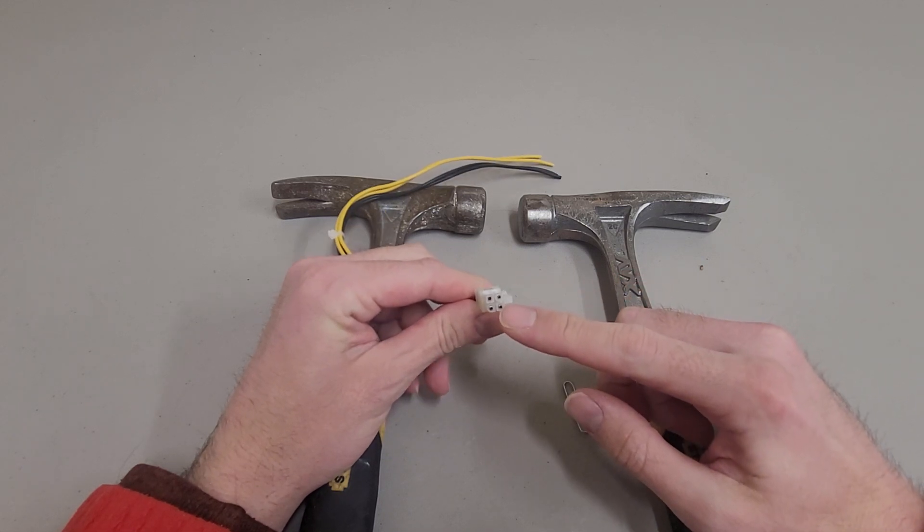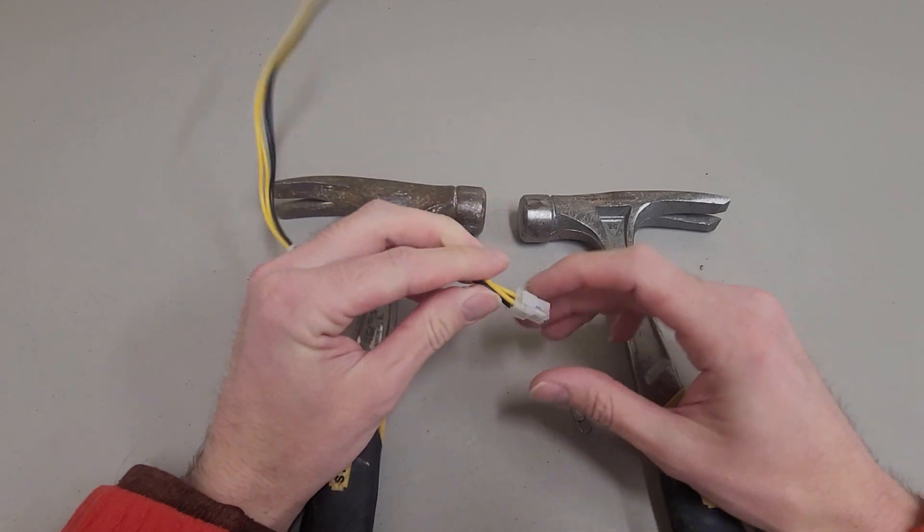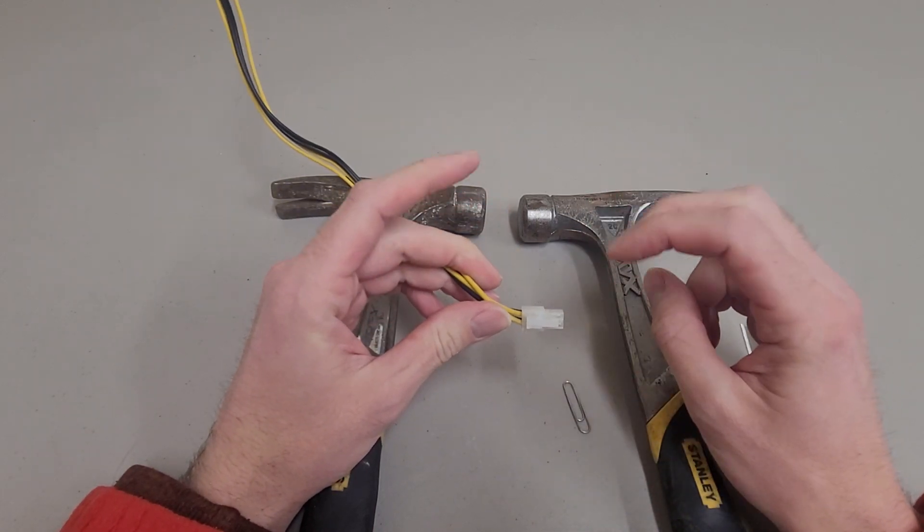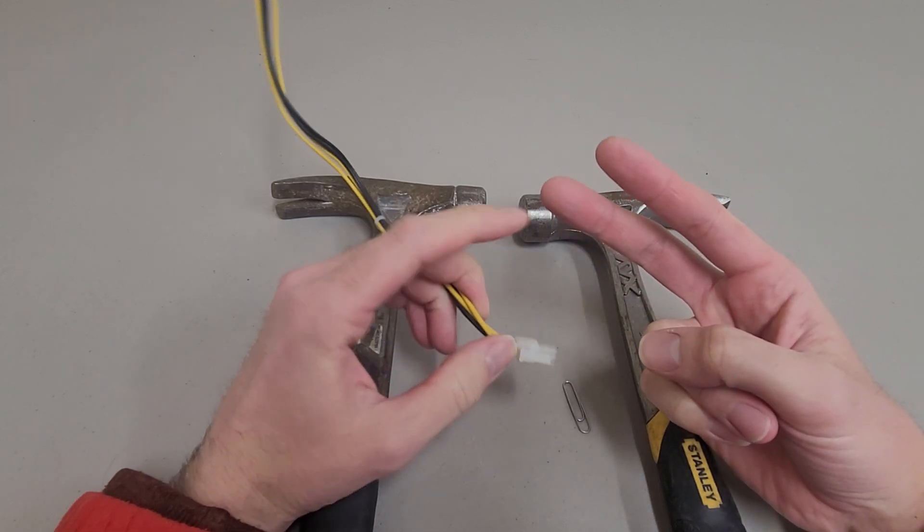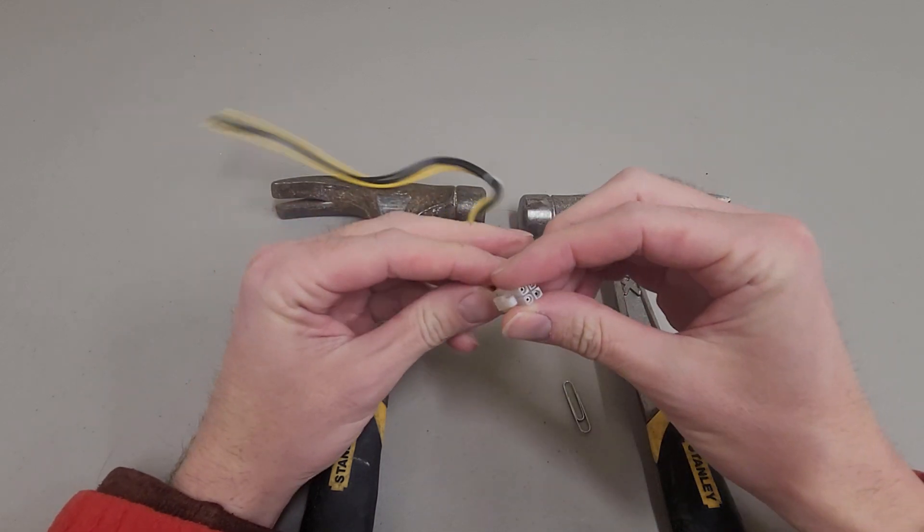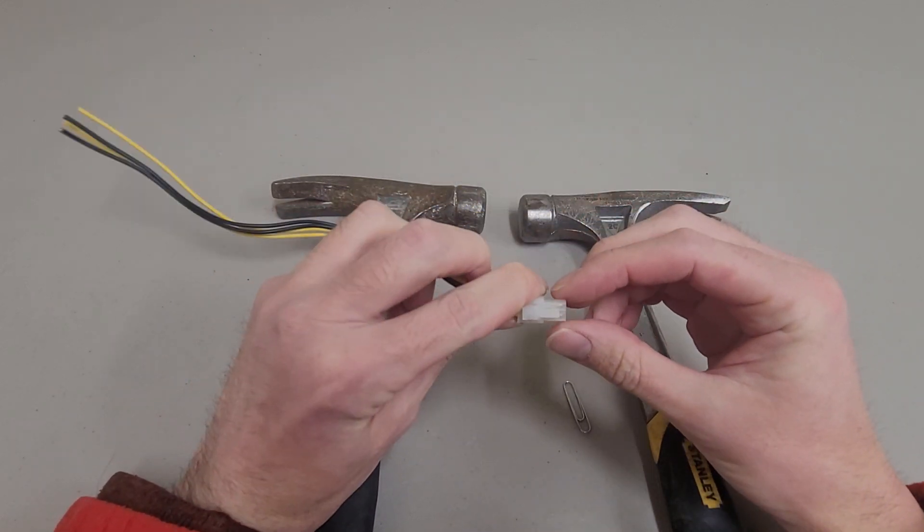There's an official tool you can buy to extract these pins, but from what I've read it's kind of a disposable tool. It's basically a pair of metal tongs that stick into the connector's pins and then pushes the locking tabs in.